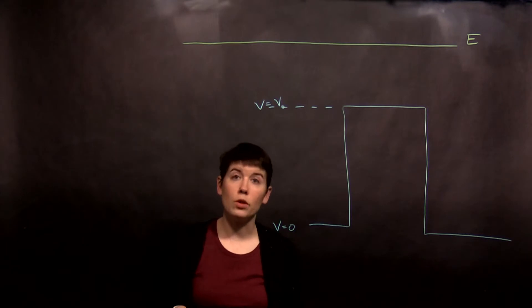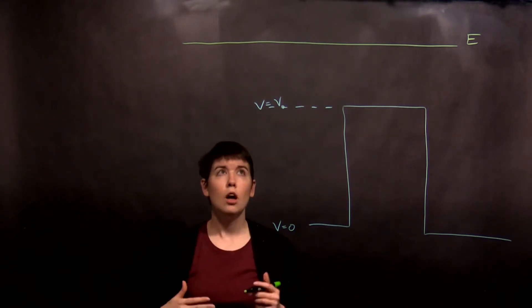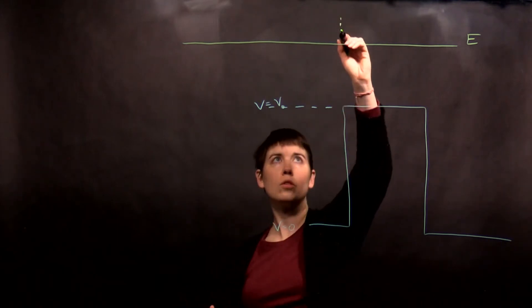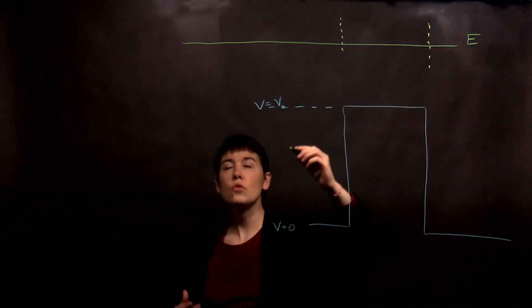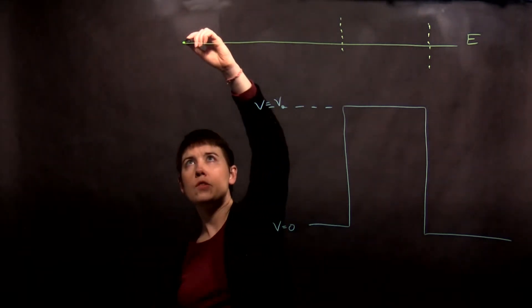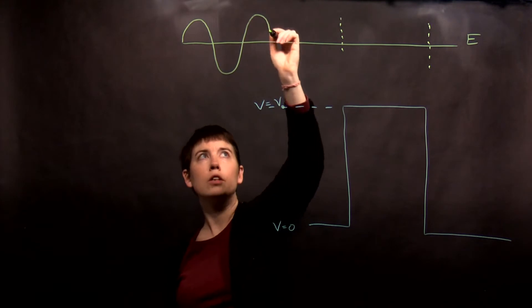We can sketch what that's going to look like. Again, this is part of the value of what we did in the last chapter of trying to actually just qualitatively sketch what's going to happen. So I'm going to have a certain wavelength and amplitude out here. Now, I'm not very good at drawing.